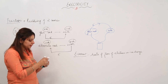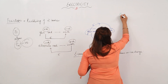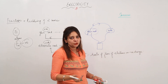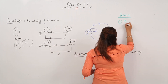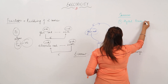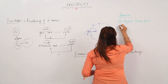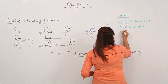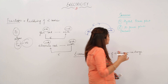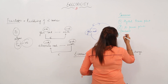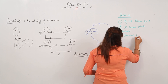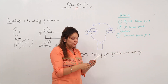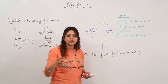Now, what are the main sources from which we can get electricity on a large scale? We generate it in hydel power plants, in nuclear power plants — where we use radioactive materials like uranium-235 — and in thermal power plants. So in these three types of plants, electricity is being generated on a large scale.